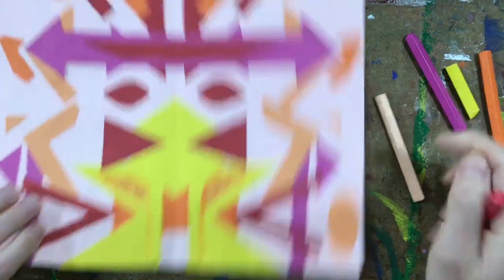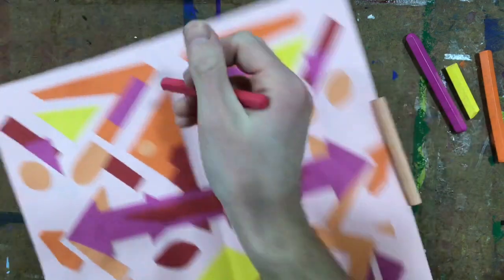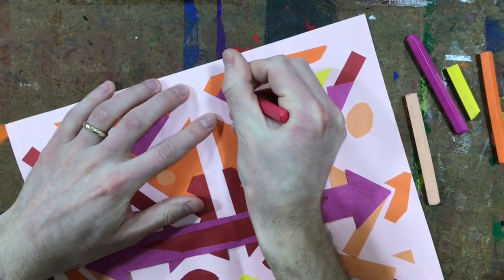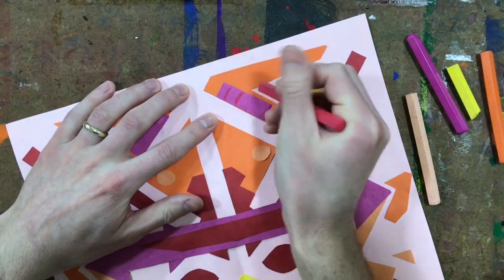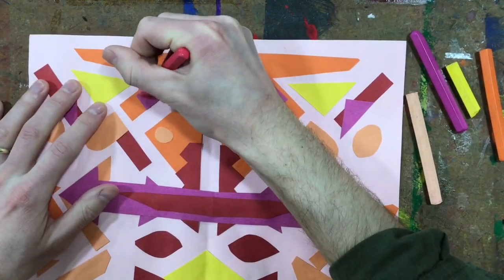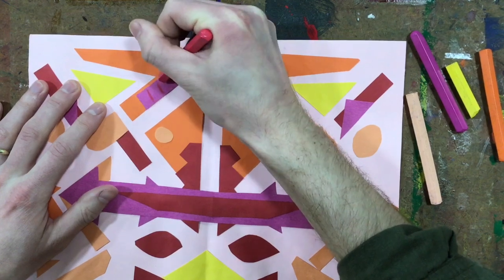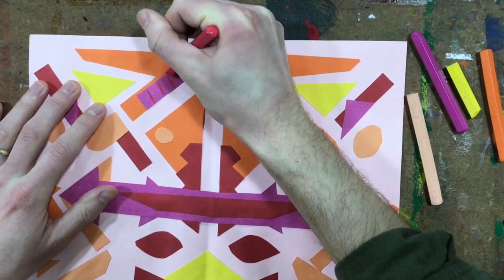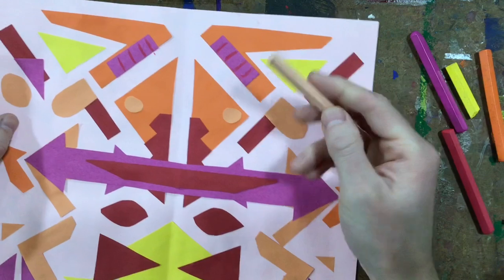You want to do some stripes up here. Press kind of hard so it shows up. And if you try coloring on something that is wet, it might not work very well. Like wet from glue underneath it.